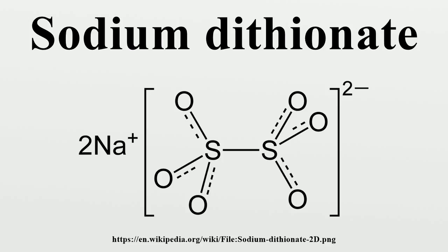The dithionate ion represents sulfur that is oxidized relative to elemental sulfur, but not totally oxidized. Sulfur can be reduced to sulfide or totally oxidized to sulfate, with numerous intermediate oxidation states in inorganic moieties, as well as organosulfur compounds. Example inorganic ions include sulfite and thiosulfate.